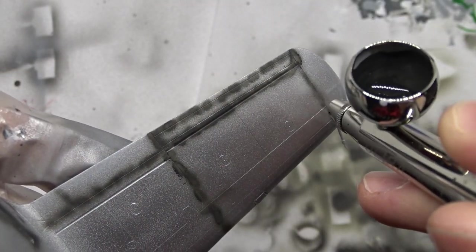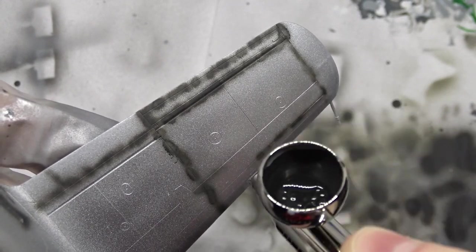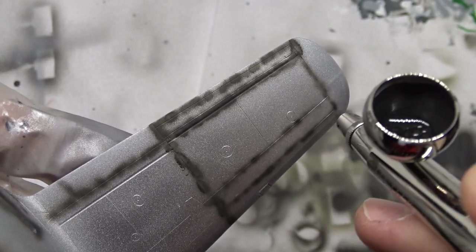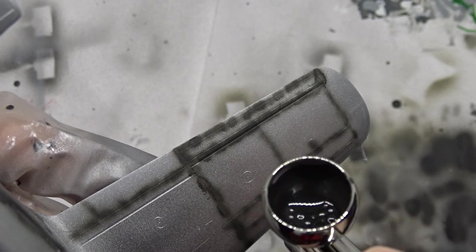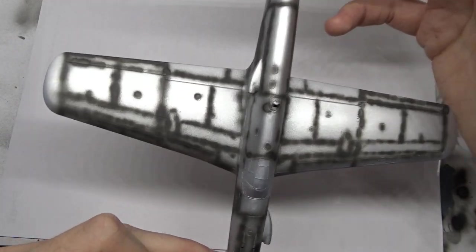After that I sprayed the whole model silver and did some pre-shading. I recently got myself a new nozzle for my airbrush, so that worked out nicely.